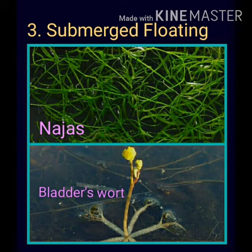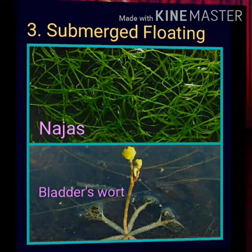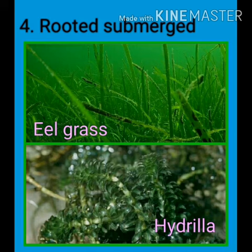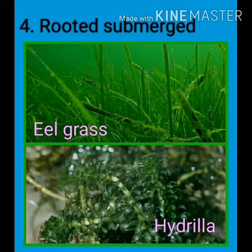The next type is rooted submerged. The roots of these plants are fixed in mud or soil, and they are completely submerged in water. Eel grass and hydrilla are examples of rooted submerged plants.